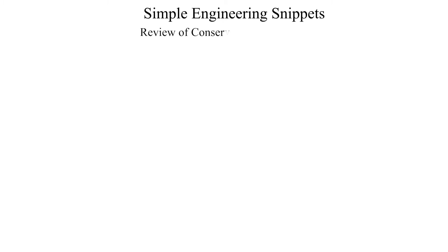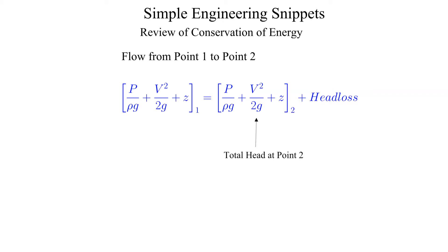Let's also review conservation of energy applied to a flowing system from an upstream location to a downstream location. Conservation of energy tells us that the total head at point two, the downstream location, is equal to the total head at point one minus the head loss between points one and two.